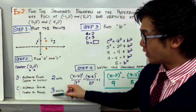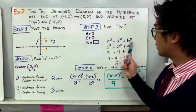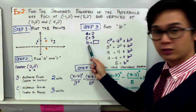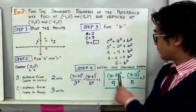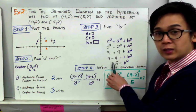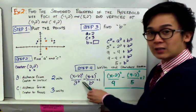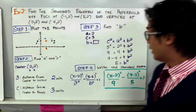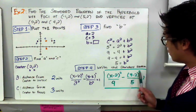Now that we have A, C, and h and k, let's find B using c squared equals a squared plus b squared. Substituting: 3 squared equals 2 squared plus B squared, giving B squared equals 5. We don't need to take the square root since the formula uses B squared. With A equal to 2, A squared equals 4. Therefore, the standard equation of the hyperbola is x minus 2 squared all over 4 minus y minus 2 squared all over 5 equal to 1.